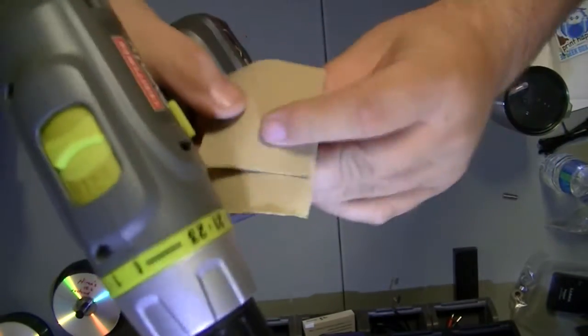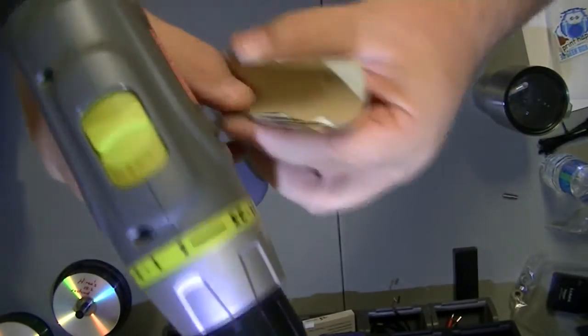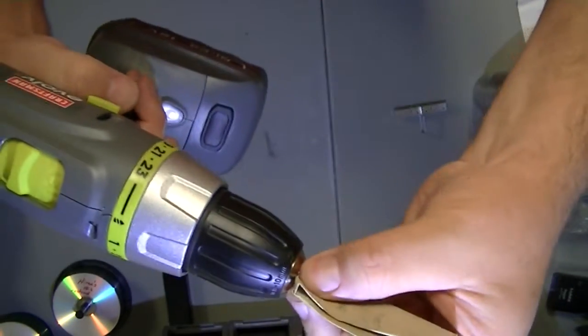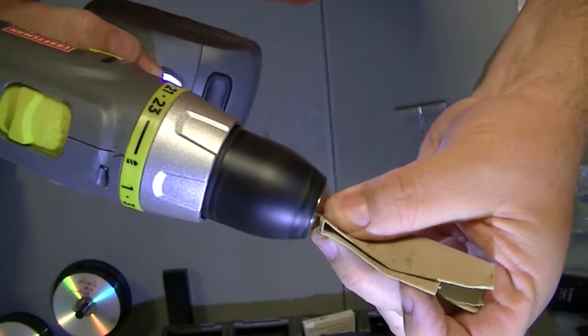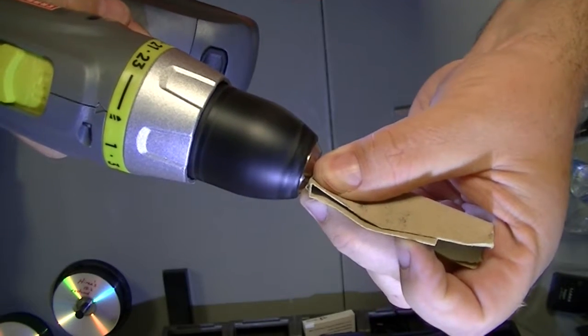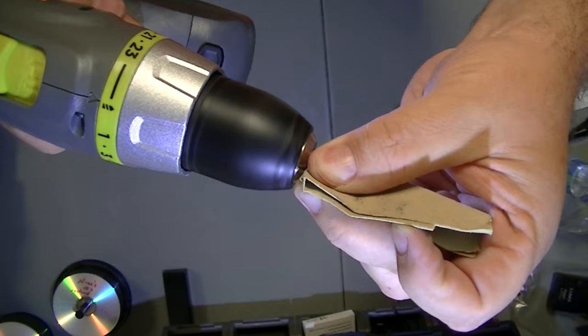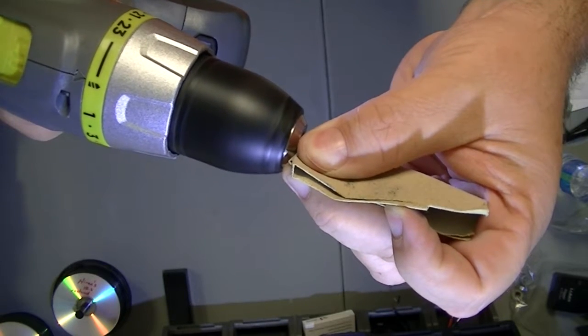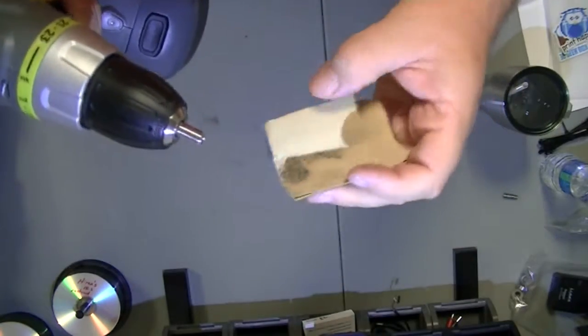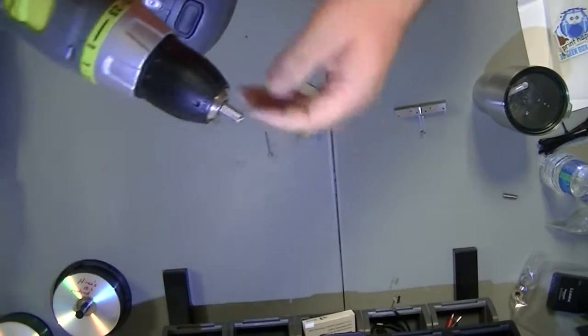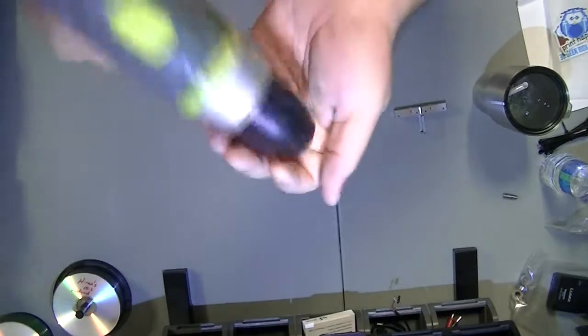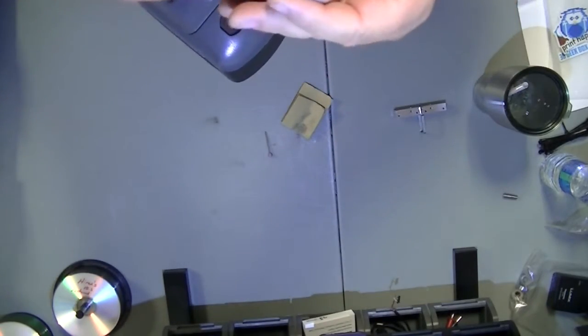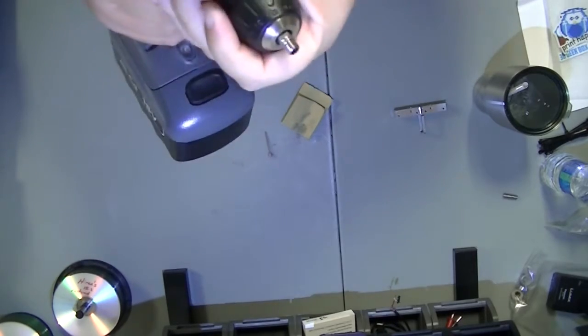So I'm going to get some sandpaper here and just simply hold it. Now this is very fine grit so it's not going to take away a lot of metal, and just to make it even.